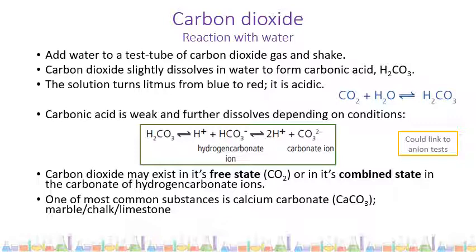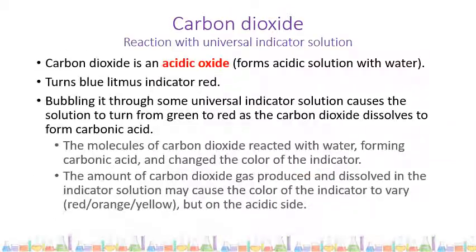One of the most common combined-state examples is calcium carbonate, which appears as marble, chalk, or limestone. It's also worth noting that the hydrogen carbonate ion and the carbonate ion feature in the anion tests you need to know, so make a quick note on those as well.